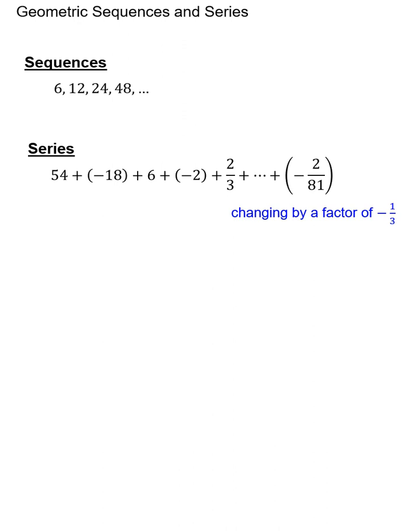That means if I were to take any term and multiply it by negative 1/3, we would get the next term. We also say that this has a common ratio of negative 1/3 or that r is negative 1/3.